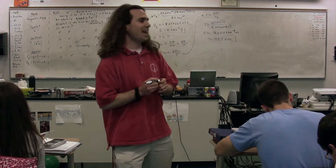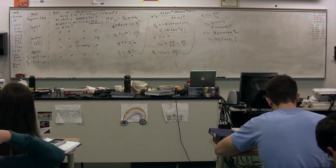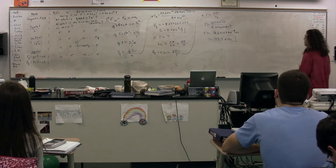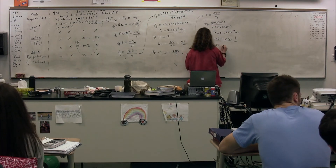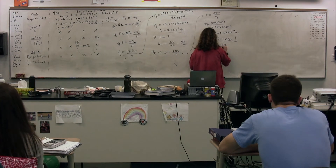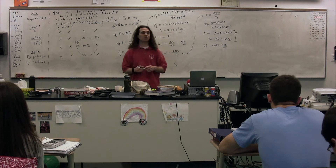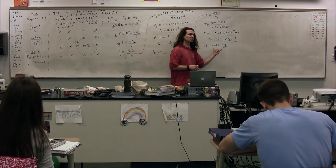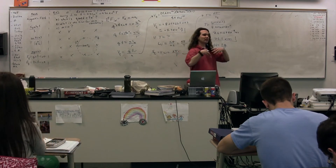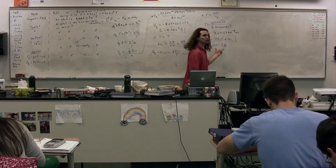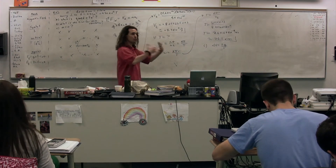Travis, do we use electric potential difference equals k times charge over radius? We are not going to use this equation. Why not? This is just for a point charge — it gives the potential difference created by a point charge. We're accelerating a point charge through a potential difference, so it's a different thing. We're talking about the potential difference through which it is going.